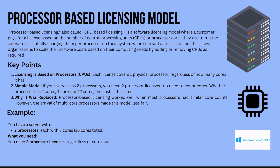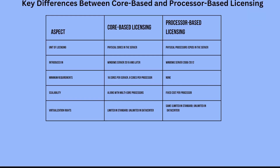Example: you have a server with two processors, each with eight cores — 16 cores total. What you need: just two processor licenses, regardless of core count. Now let's look at the main key differences between core-based and processor-based licensing.